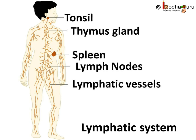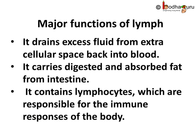The primary function of the lymphatic system is to transport lymph throughout the body. The major functions carried out by lymph via the lymphatic system are: it drains excess fluid from extracellular space back into blood; it carries digested and absorbed fat from the intestine — specifically, it is the lymphatic capillaries called lacteals that absorb fat in the villi of the small intestine. Lastly, the lymph contains lymphocytes, which are responsible for the immune responses of the body.